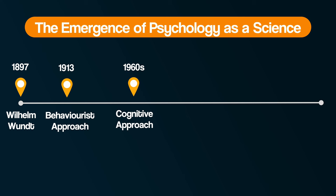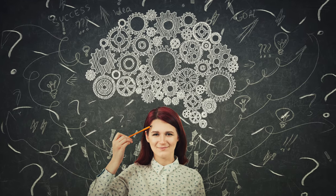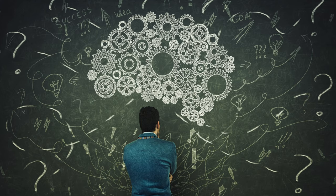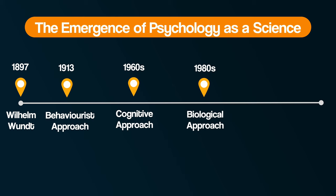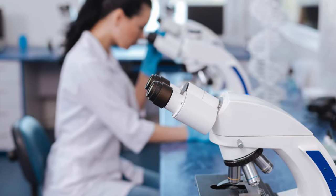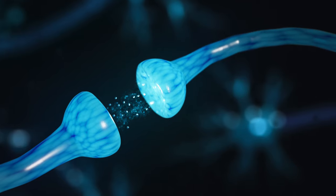Then in the 1960s, with the dawn of computer technology, came the cognitive approach, focusing on studying internal mental processes such as memory in a highly scientific way through controlled experiments that could be objectively measured and replicated. With the further development of technology in the 1980s, the biological approach became the most dominant way of studying behaviour and the mind — advances in technology allowed for the study of how genetics may be involved, as well as the role of different brain chemicals in influencing human behaviour.